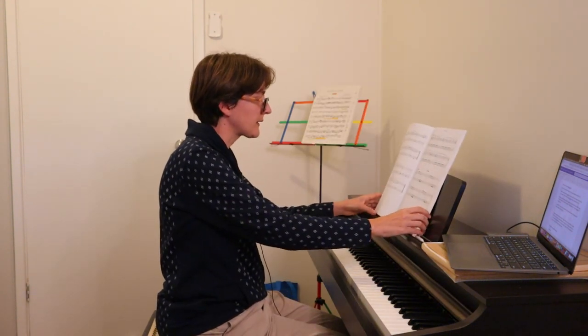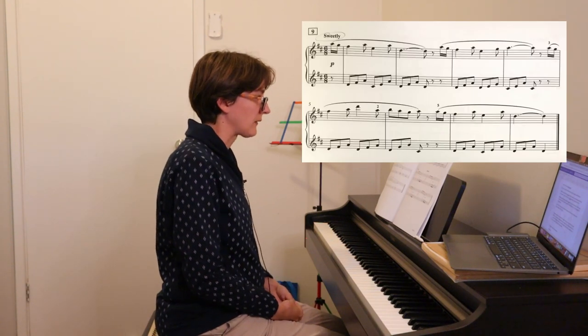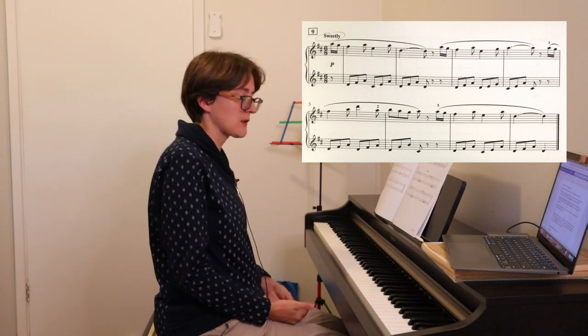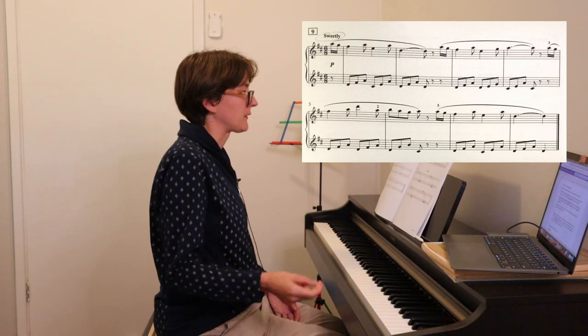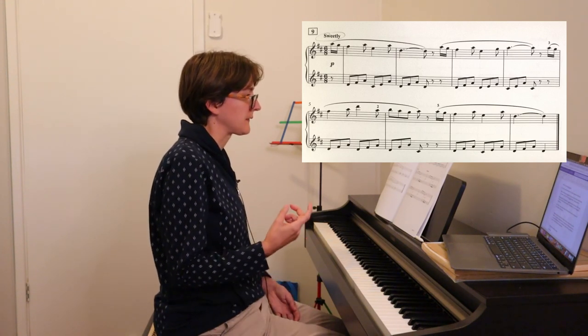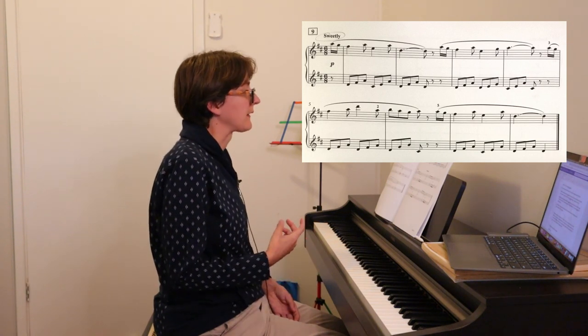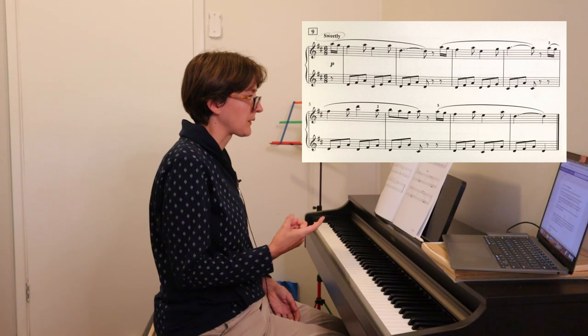Let's look at another one, which is number nine. Now this one I've chosen because it's in a different time signature. This is six eight. So the way you want to count this is one, two, three, four, five, six. Or one and two and. And this one starts with an upbeat.